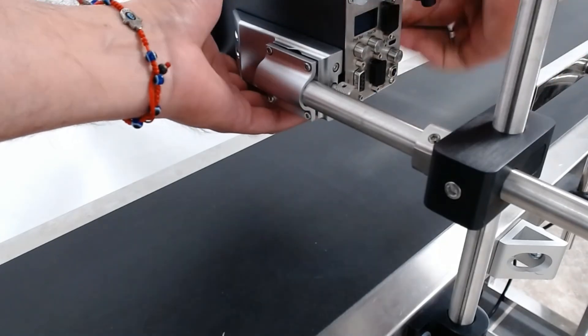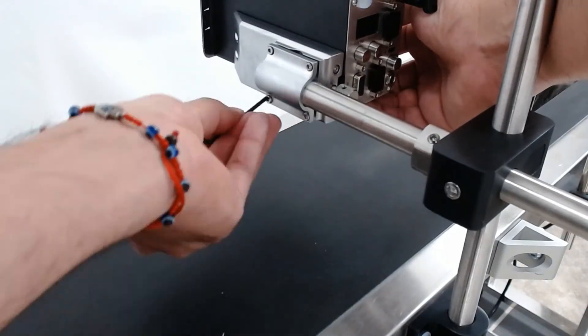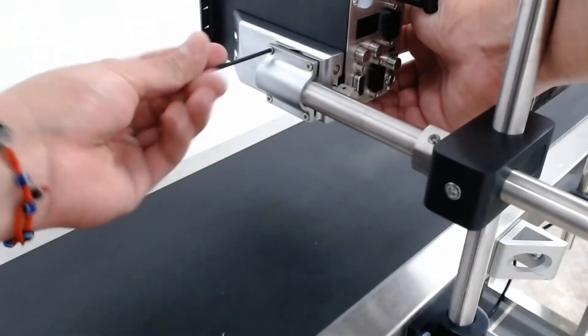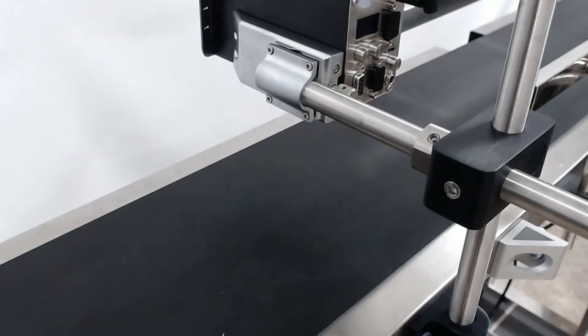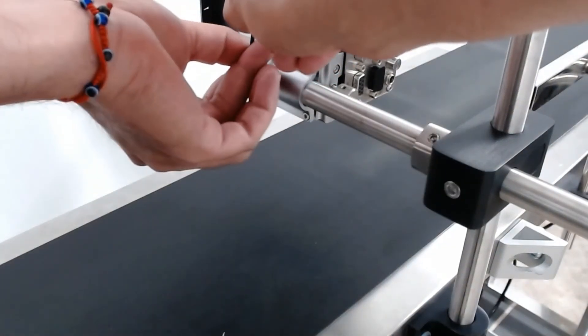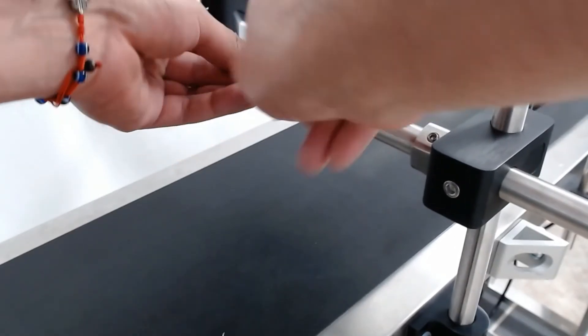And with the way this clamps down, you're going to want to do them all just kind of hand tight at first before you tighten any one down all the way. And then once you get them all just kind of tight and in place, we'll go ahead and tighten them down all the way. Just go ahead and give it about half a turn or a full turn on each screw.